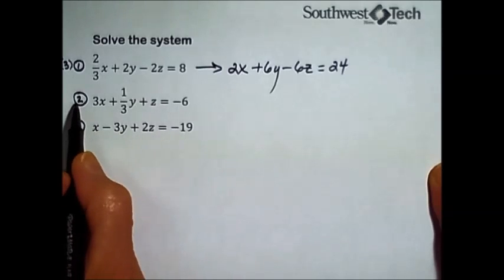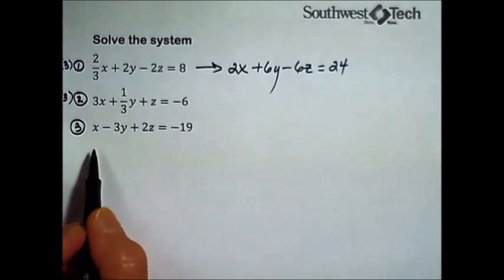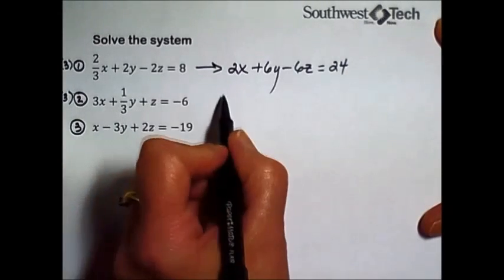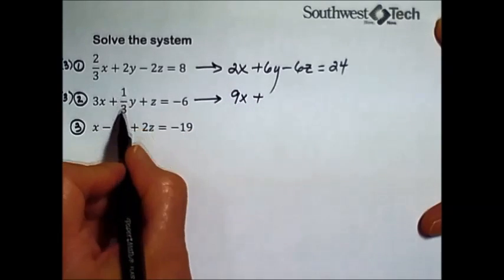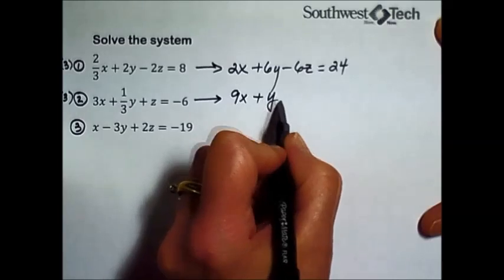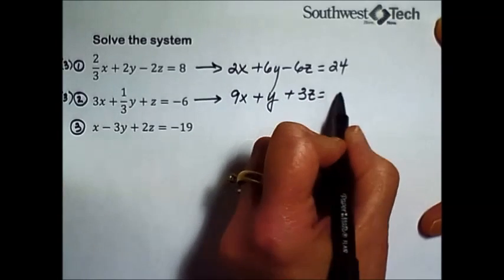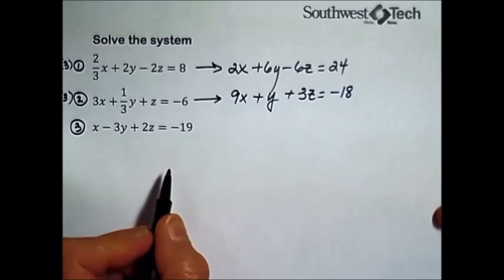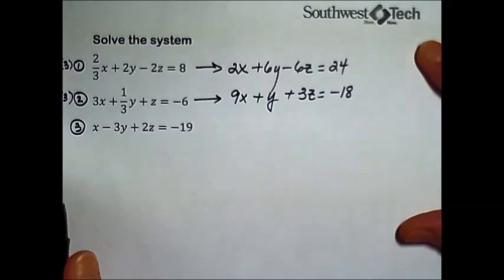The second equation has a fraction with a denominator of three, so I'm going to multiply every term by three there as well. Three times 3x leaves us with 9x. The three cancels out the one-third, leaving 1y. Three times z is 3z, and three times negative 6 leaves us with negative 18. So here's the new versions of 1 and 2.